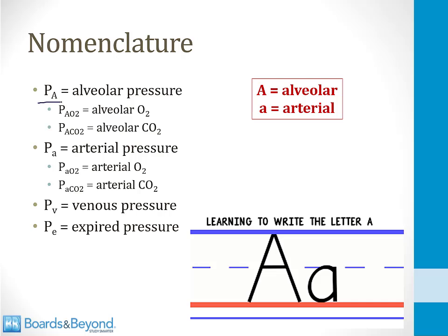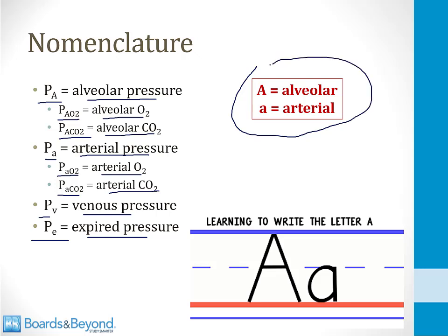Let me review nomenclature for gas concentrations in pulmonary physiology. P with a capital A refers to alveolar partial pressure — so P-capital-A-O2 is alveolar O2 and P-capital-A-CO2 is alveolar CO2. P with a lowercase a refers to arterial partial pressure — P-little-a-O2 is arterial oxygen and P-little-a-CO2 is arterial CO2. Other pressures include P-V for venous and P-E for expired.